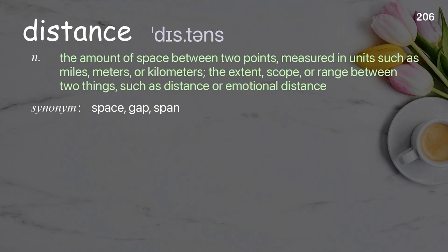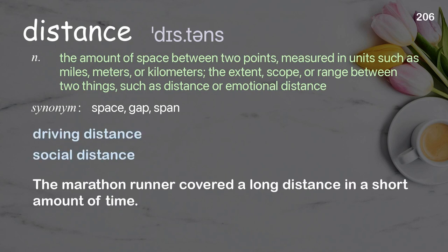Distance: the amount of space between two points measured in units such as miles, meters, or kilometers; the extent, scope, or range between two things, such as physical or emotional distance. Examples: driving distance, social distance. The marathon runner covered a long distance in a short amount of time.